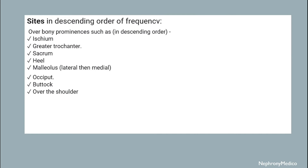The sites in descending order of frequency occur over bony prominences: ischium, greater trochanter, sacrum, heel, malleolus, occiput, buttock, and over the soles.